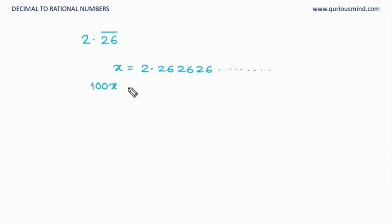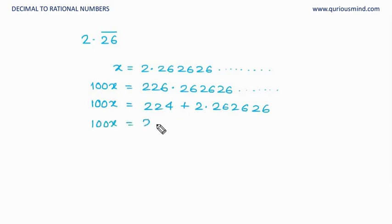So 100x is equal to 226.2626262626 and so on. Here is the small change now. Here we want after plus we want 2.26. We want the x and hence here it should be 224. Till now what we did 226 plus 0 point but we do not want 0 point we want 2 point. So that 2 point we have written here and then remaining is 224 here. And therefore 100x is equal to 224 plus x.